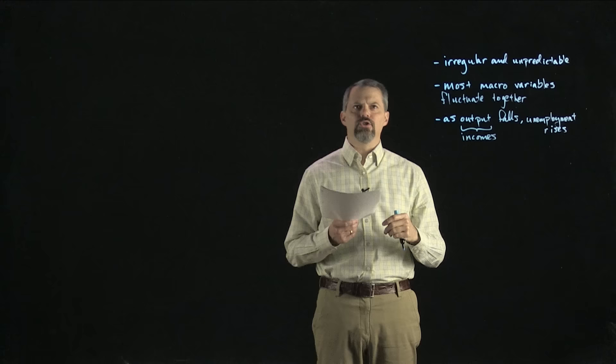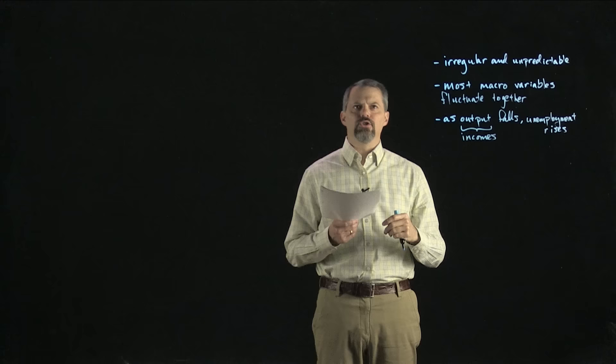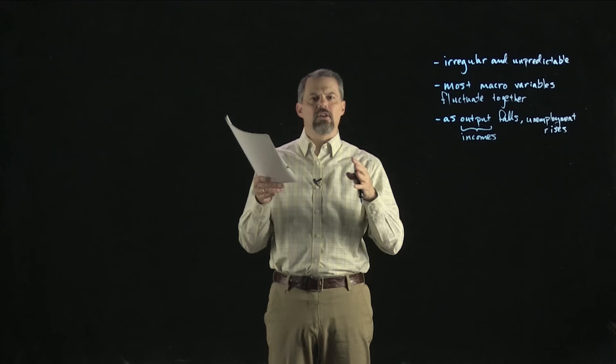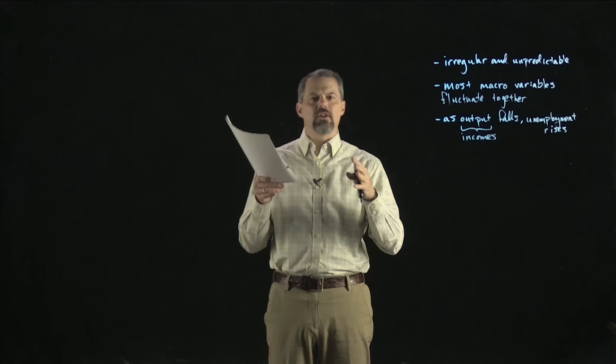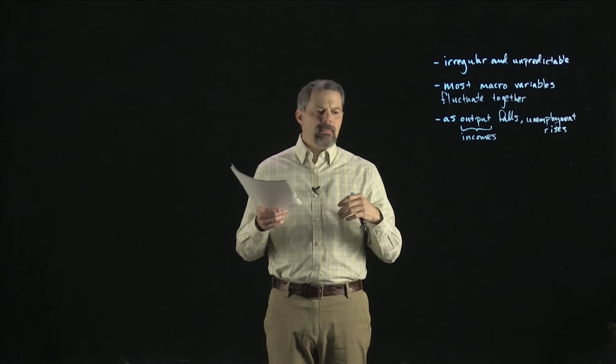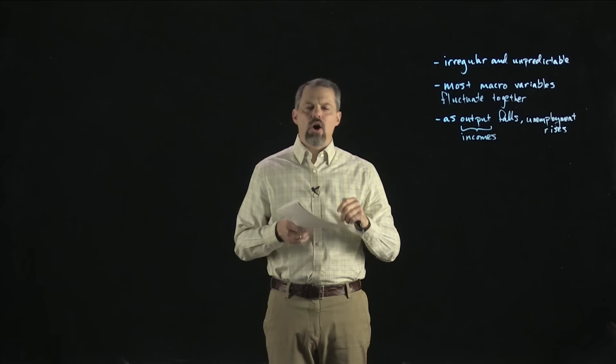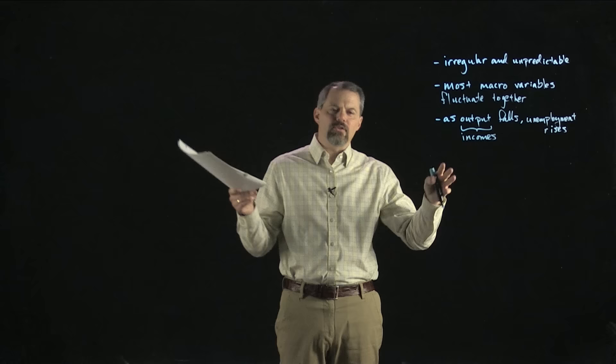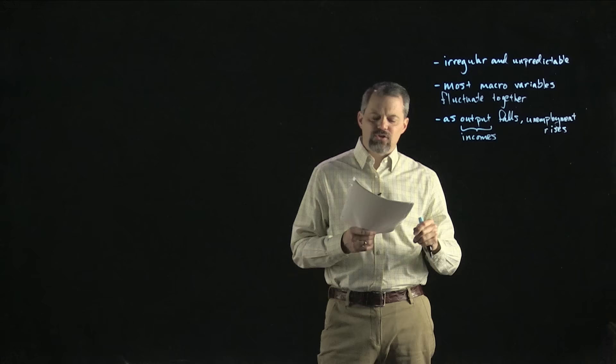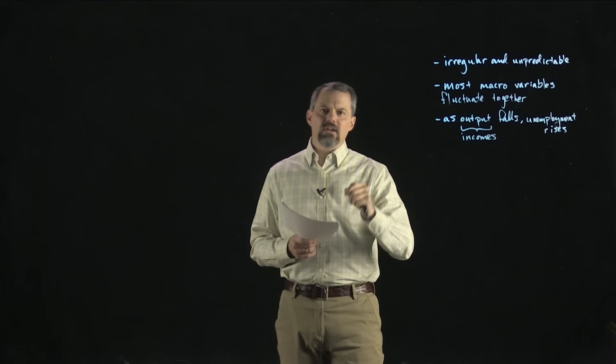Let's talk about how we're going to use this model. This model is actually what we would call a short-run model. All of the things we've talked about in this class up to this point — the demand and supply for loanable funds, what caused unemployment to go up or down, monetary neutrality — all of those were long-run models. This aggregate demand-aggregate supply model is a short-run model that helps us understand what causes short-run fluctuations in an economy.